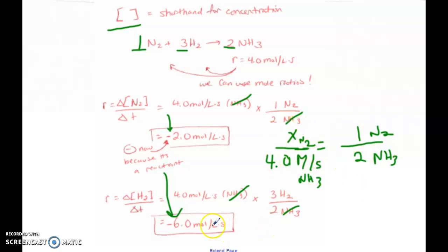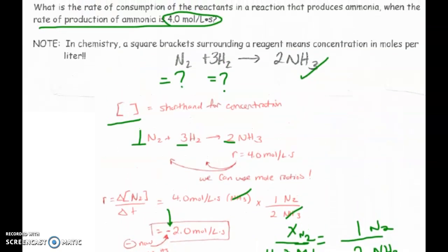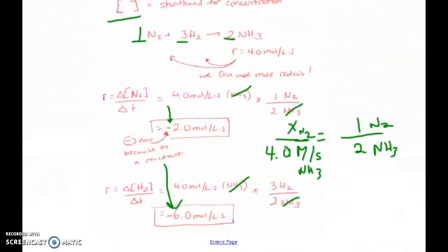So if you set it up this way, you will still get the same response. So the key to this is if you have a balanced chemical reaction and you know the rate of one component, it doesn't matter if it's a reactant or a product, you can apply that to anything because we know mole ratios exist.